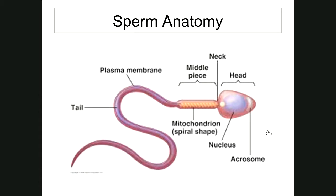Looking at the parts of a sperm, there is a head which contains the parental DNA — the 23 chromosomes are in the nucleus of the head. The head also has a cap called an acrosome.